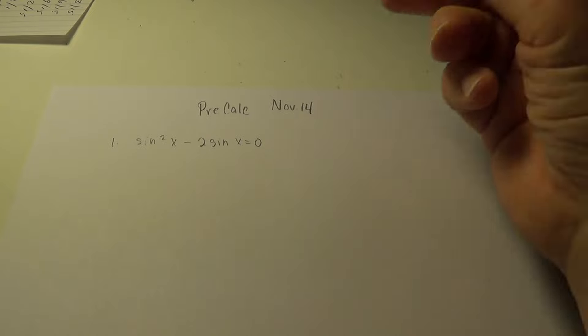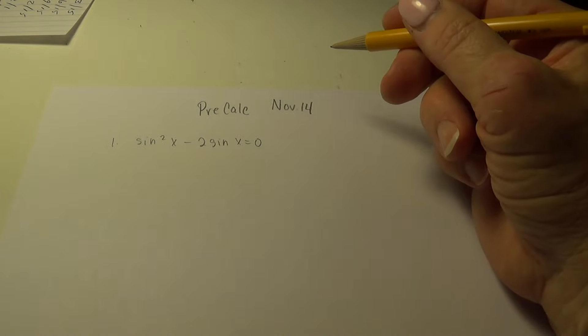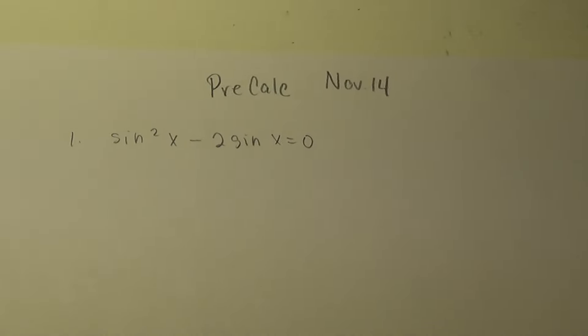Let me get my timer going. Alright. sin²x - 2sin x = 0. To solve a trig equation, we usually end up factoring. I can't think of one where factoring isn't involved. So let's factor this one.